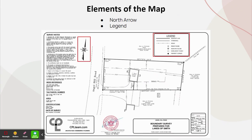First, we'll want to identify a few elements of the map, such as the north arrow and the legend. The north arrow indicates the direction of the north to help us orient the location of the boundary on the ground. The legend shows different line types and symbols which represent some of the features we'll find on your property.